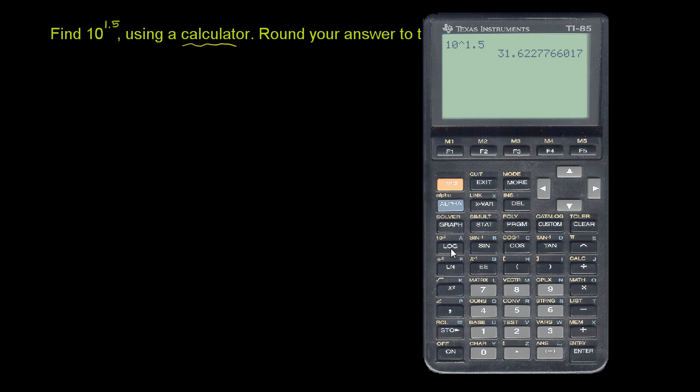The other way you could do it is you could use essentially the inverse of the log button right over here. So if you do second log, because log is base 10, it immediately goes 10 to the, and we do 1.5 again. That seems a little bit more cumbersome though, because you have to press that orange button and all that. And you get the same answer.